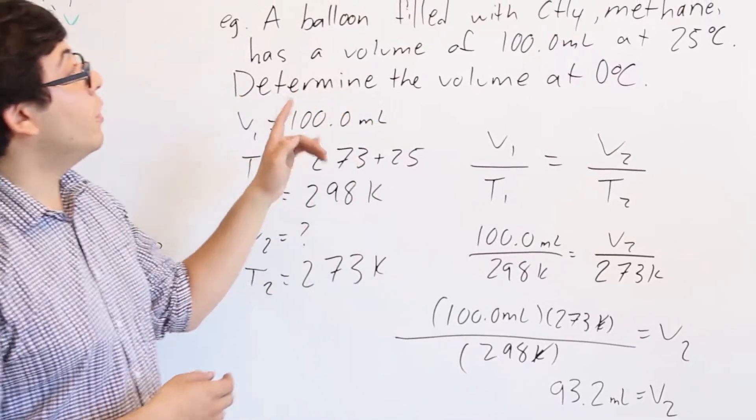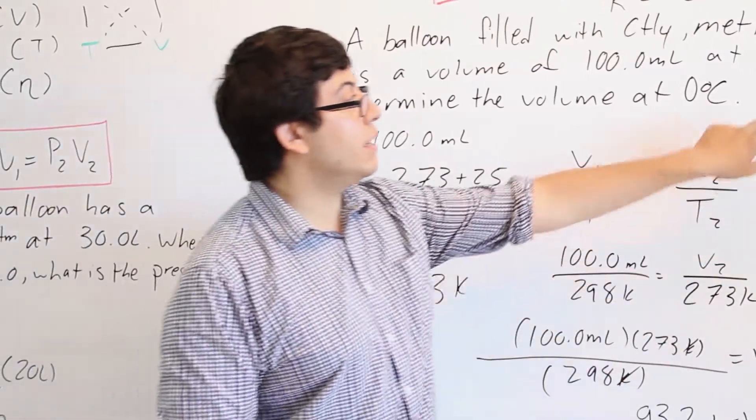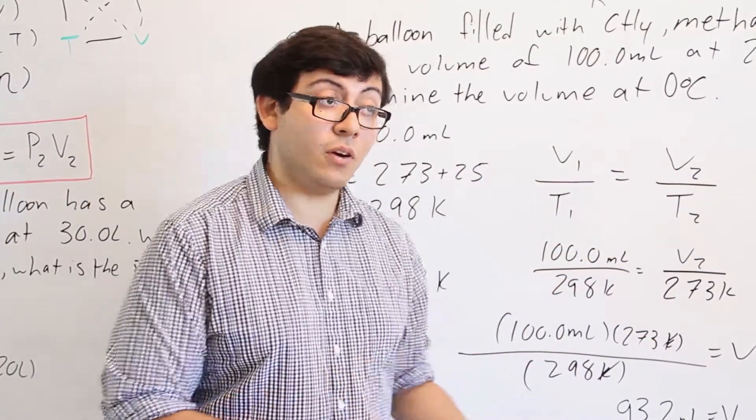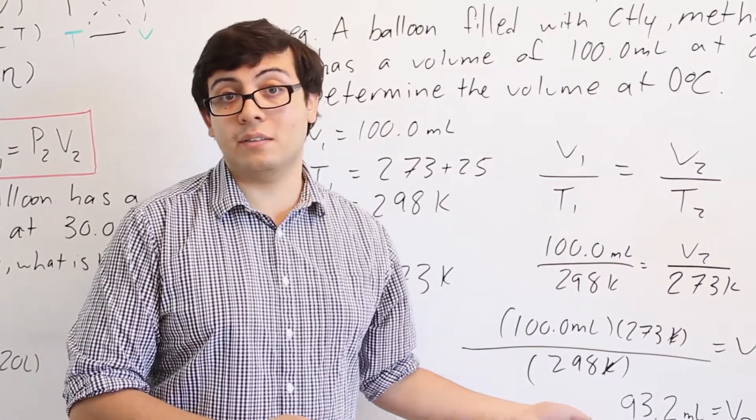Remember volume and temperature are directly proportional, so if we're going to decrease the temperature as we're doing in this case going from 25 degrees to 0 degrees, we should also decrease the volume. So we're going from 100 milliliters to 93.2, so our answer makes sense.